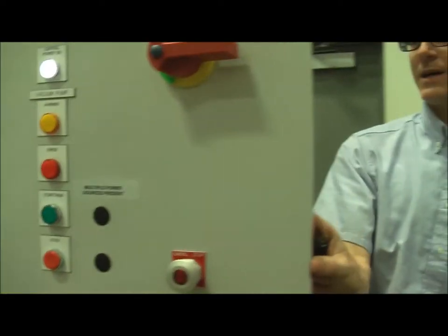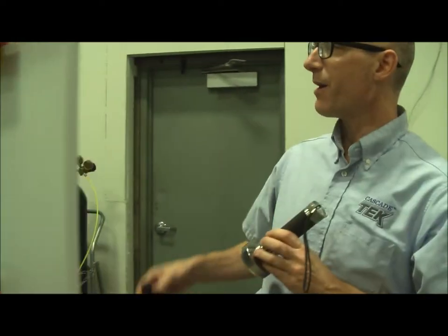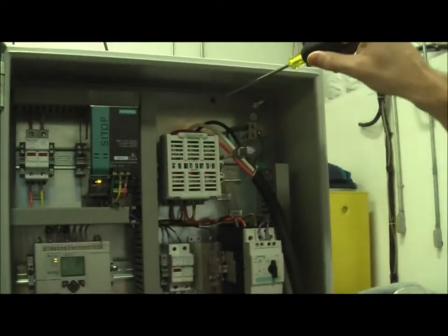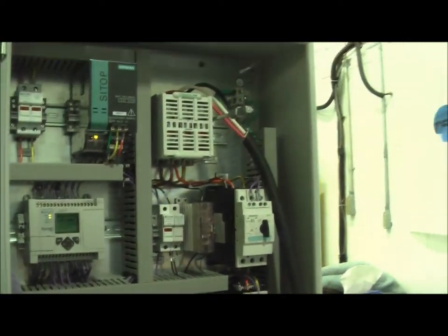If for some reason it's going backwards, then we can come inside the panel, turn the power off, and then we'll just switch any two of the incoming phases to reverse the pump's rotation.